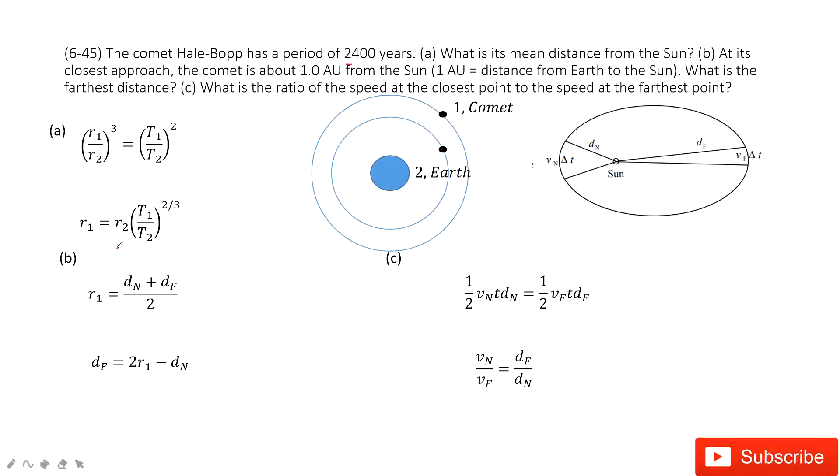In this one, the distance ratio cubed equals the period ratio squared. In this one, this is R1 over R2. R2 is the distance from the Earth to the Sun. And T1 is given, 2400 years. T2 is one year.